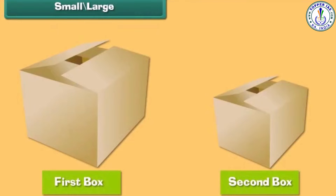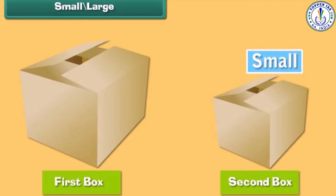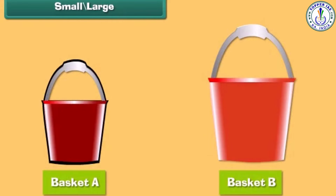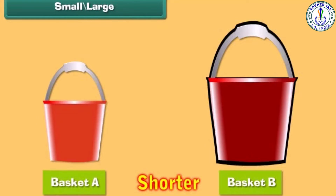We see two boxes but they are of different sizes. When two things are not of the same size, we compare them. We use the word 'small' with the object which looks shorter, and the word 'big' with the object which is large. Basket A is shorter than basket B.